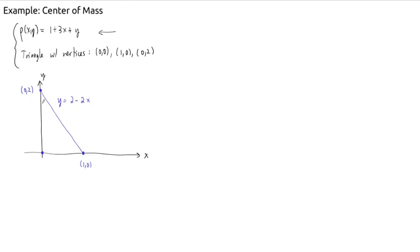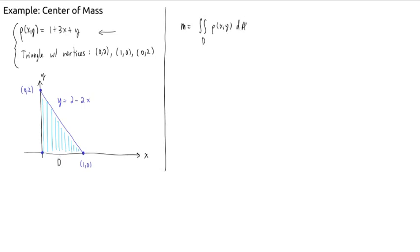This can be thought of as either a type 1 or a type 2 region. The way I've written it, it looks like a type 1, because I've got a formula y equals something. The density function doesn't seem to differ in the x or y directions individually. So let's start by computing the mass. The mass is the double integral over region D of the density function. As a type 1 region, this is the integral from 0 to 1 in x, integral from 0 to 2 minus 2x in y, of 1 plus 3x plus y, dA.